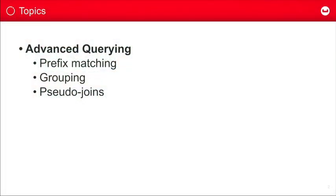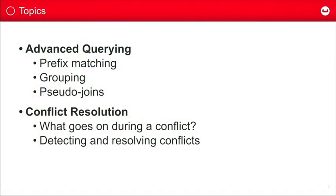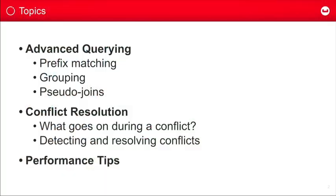I'm first going to be talking about some more advanced querying techniques, using MapReduce to do some things that are less obvious. This actually overlaps a lot with Couchbase Server, so if you've used Couchbase Server, you might be familiar with these. Topics include matching prefixes on strings, doing grouping, doing aggregation with grouping, and what I call pseudo-joins — working around the fact that we don't have a full join operation. Next is conflict resolution: how you find and resolve conflicting changes in a distributed system. And depending on time, I'll go into some performance tips to keep your app fast.